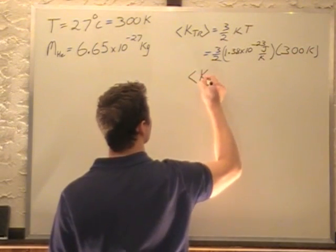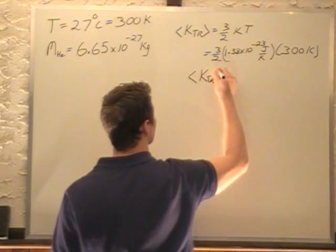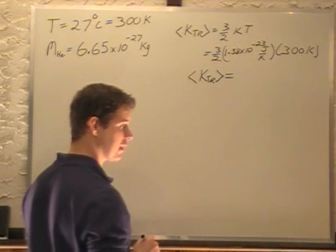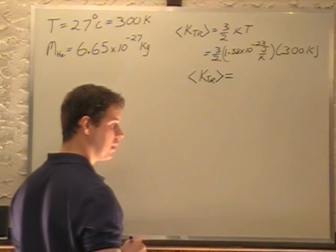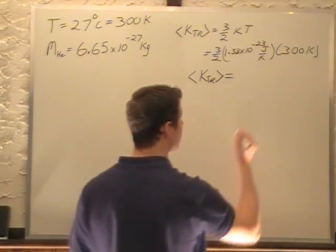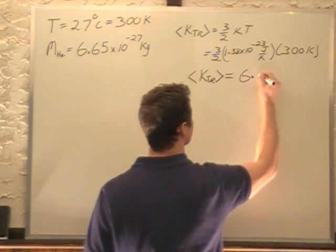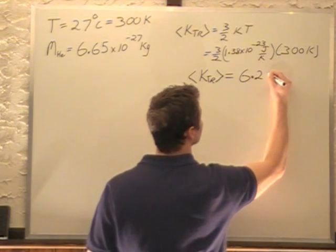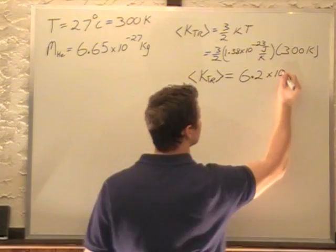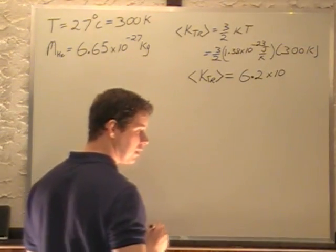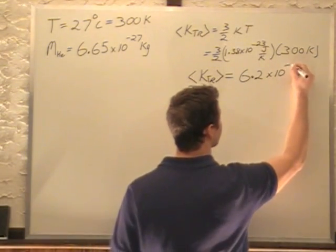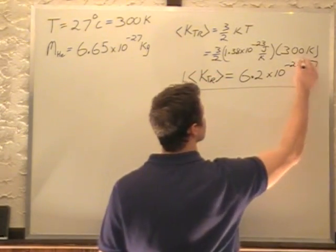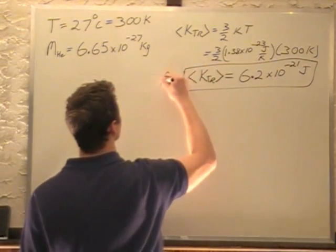So, kinetic energy of these molecules, the average kinetic energy, is, after we multiply that through, 6.2 times 10 to the minus 21 joules. So that's the final answer for A.